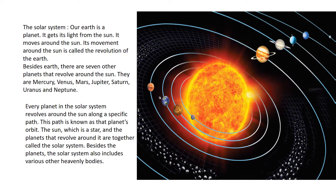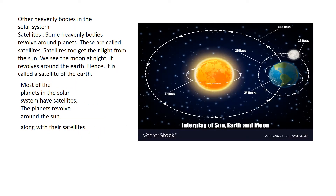The sun, which is a star, and the planets that revolve around it are together called the solar system. Besides the planets, the solar system includes various other heavenly bodies.